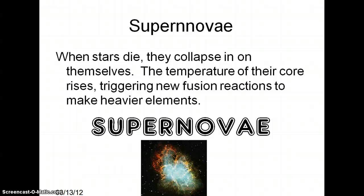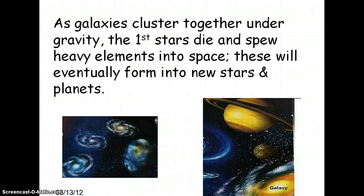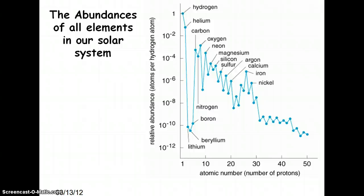As galaxies start to cluster together under gravity, first stars are dying and spewing all these heavy elements into space. These new heavy elements eventually start to cluster together, and this is where we get our planets. The planets closest to our sun happen to be made of heavier metals, while planets further out tend to be made of gas. If you look at the abundance of elements in our solar system, hydrogen and helium are very high, lithium, beryllium, and boron are very low, then carbon and oxygen jump back up, and past iron the abundance dramatically drops off.